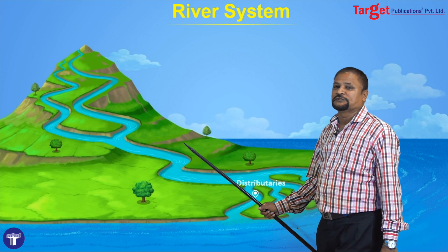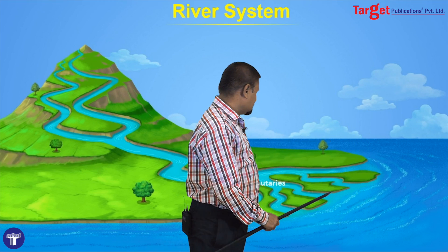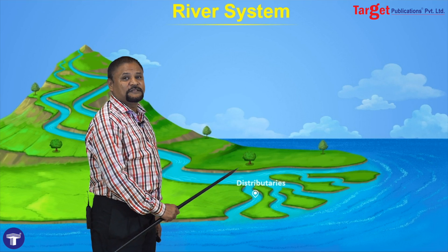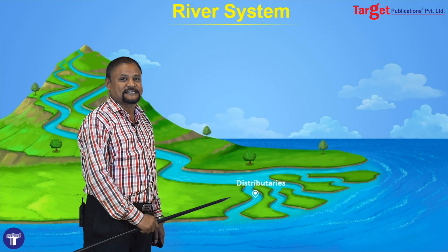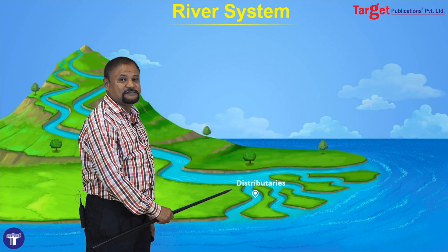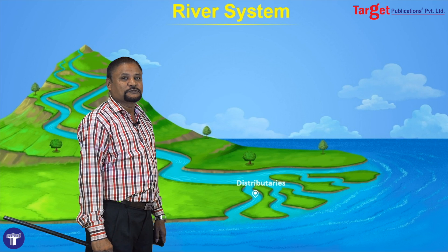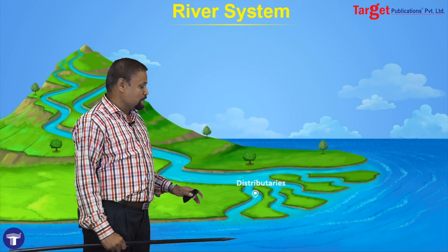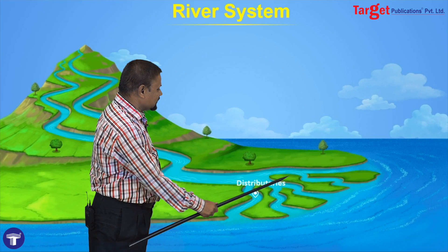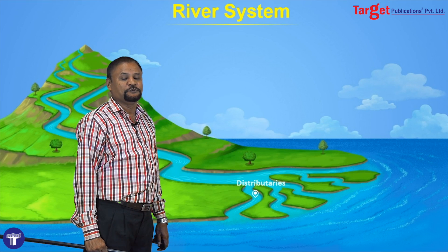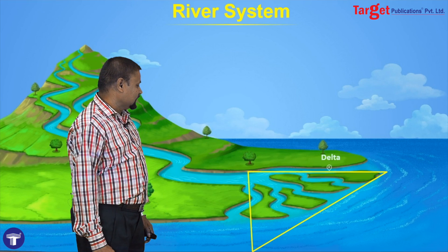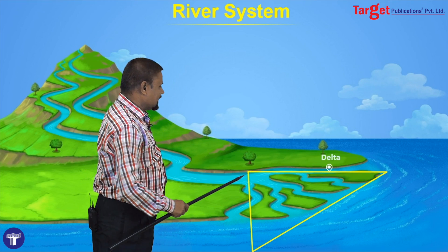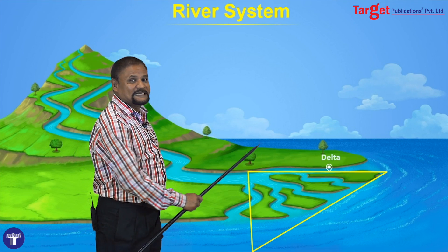When the rivers are coming to the mouth — the end of the river — they are joining the sea. At that time they are distributed into many small channels. These channels are called distributaries. So, a small river joins with the main river is called tributary, and the main river at the mouth is divided into many small rivers — they are called distributaries. This area looks like a triangular shape, and this triangular shaped region is called delta.